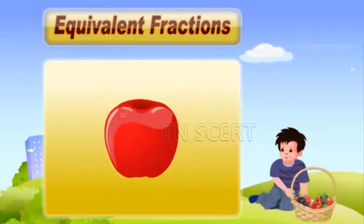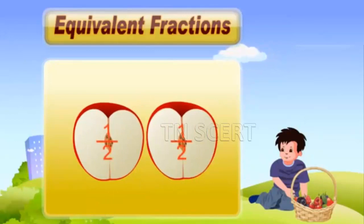Raghu has one apple. He cuts it into two equal parts. Each part is one of two. That is one by two.